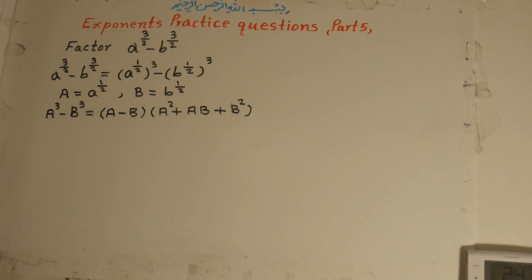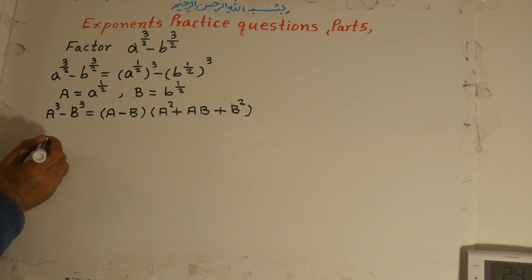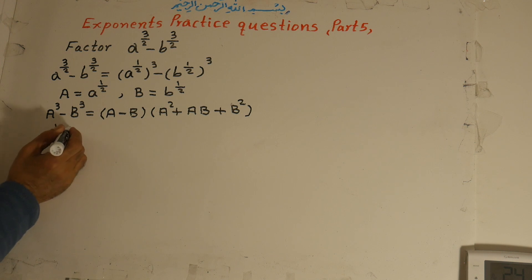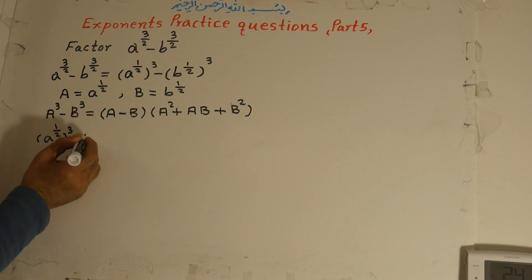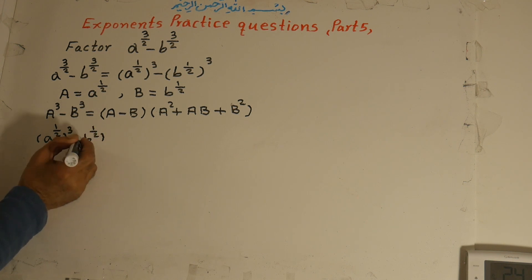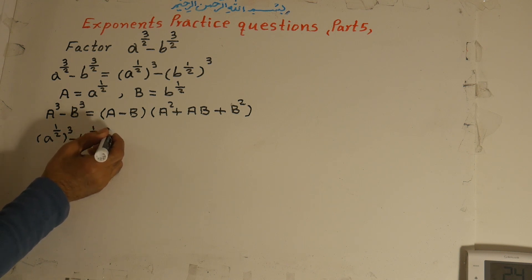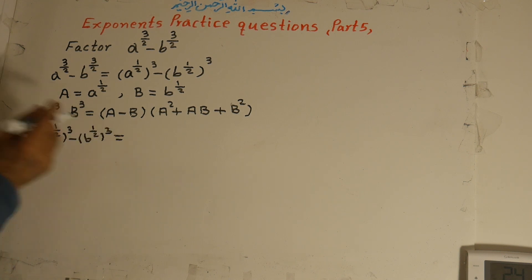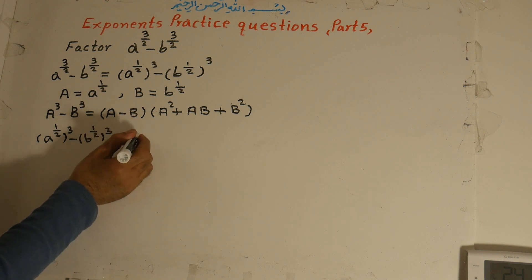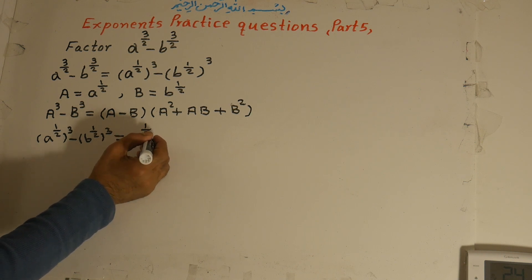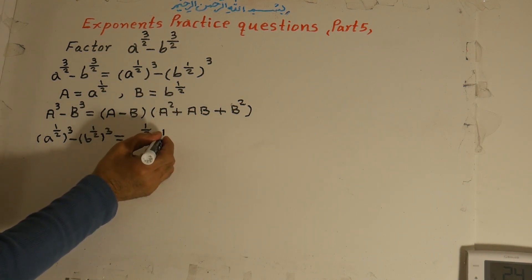Now we substitute back. A to the power of 3 means a to the power of 1 over 2, all to the power of 3. So in place of A, we write a to the power of 1 over 2, and in place of B we write b to the power of 1 over 2. The first factor becomes a to the power of 1 over 2 minus b to the power of 1 over 2.